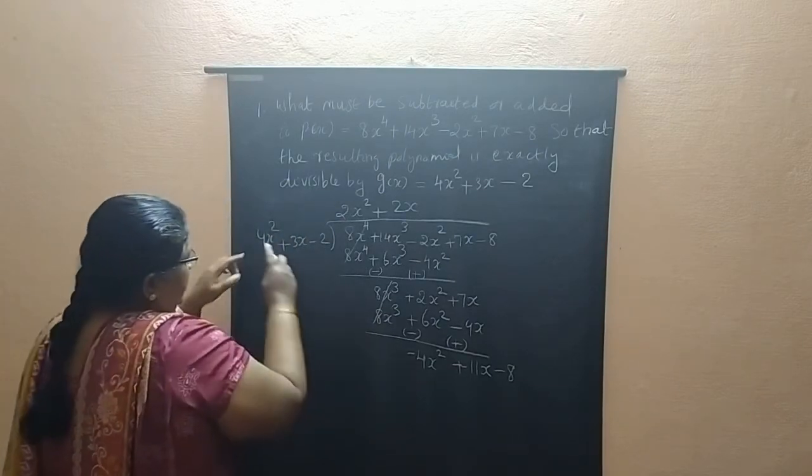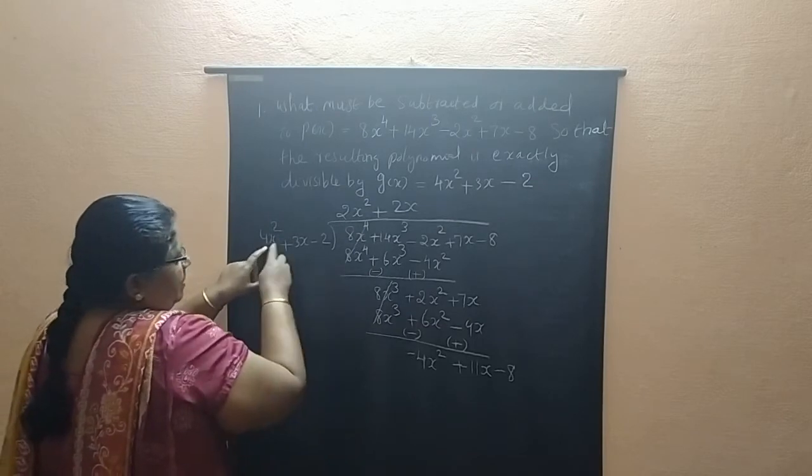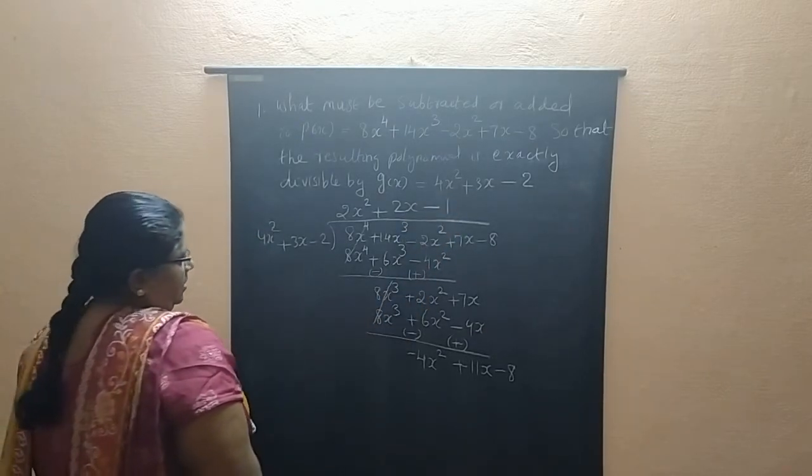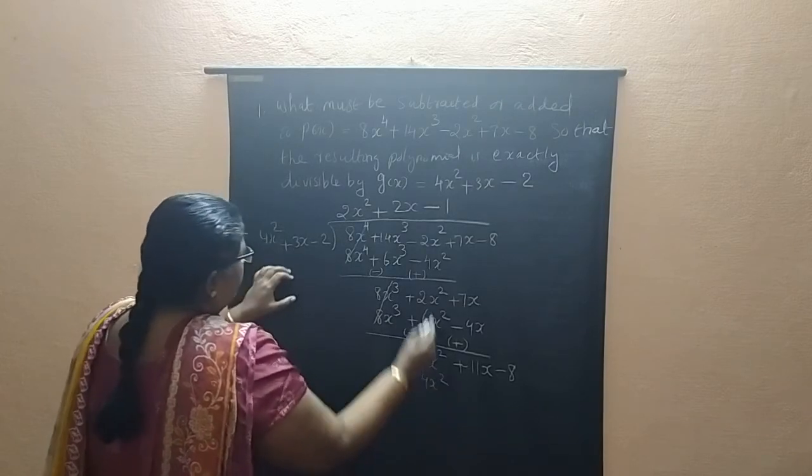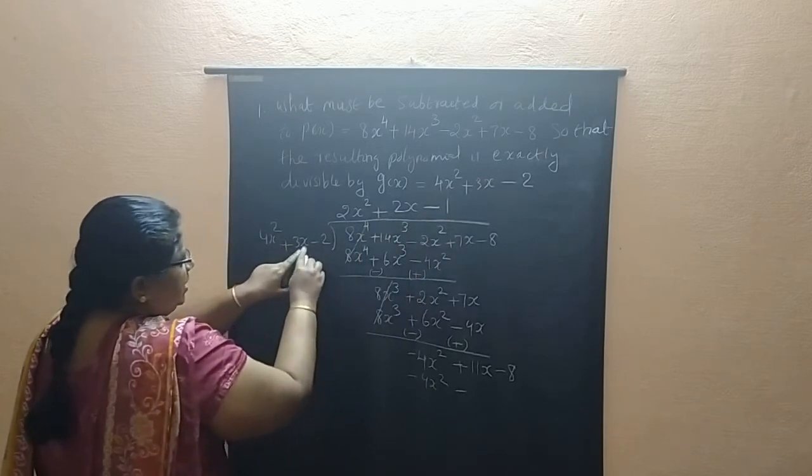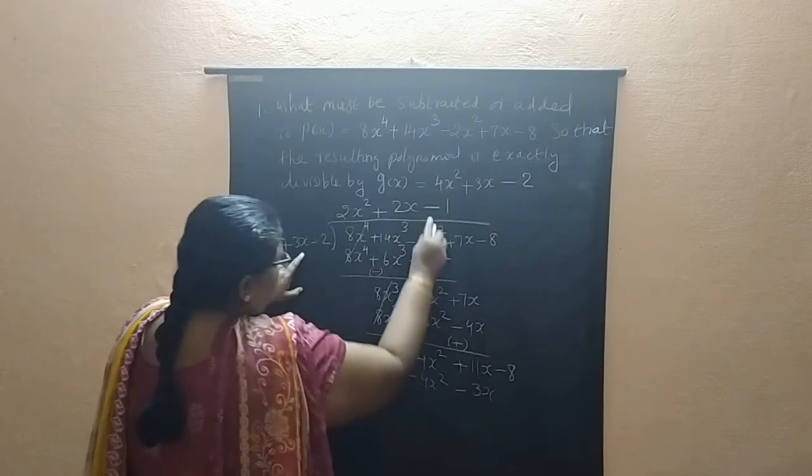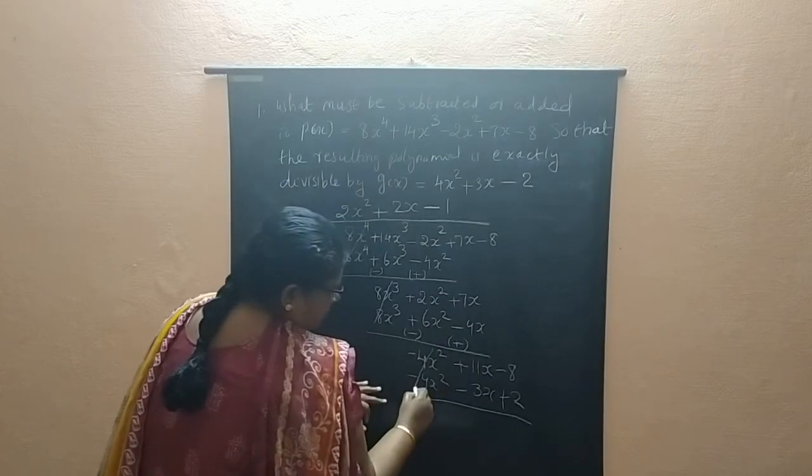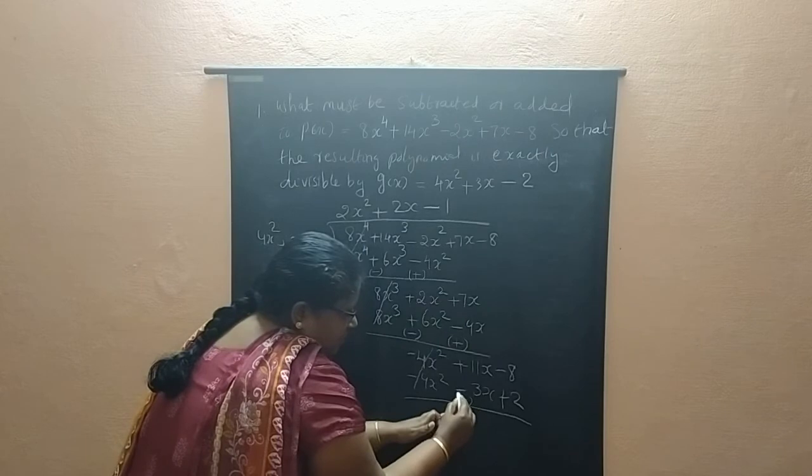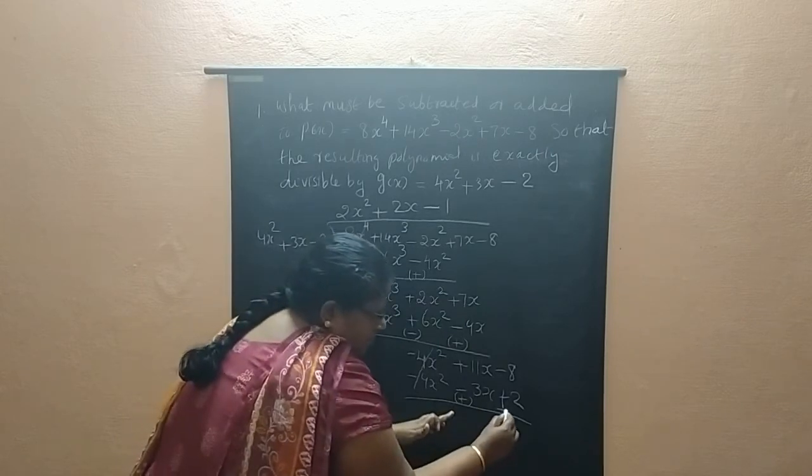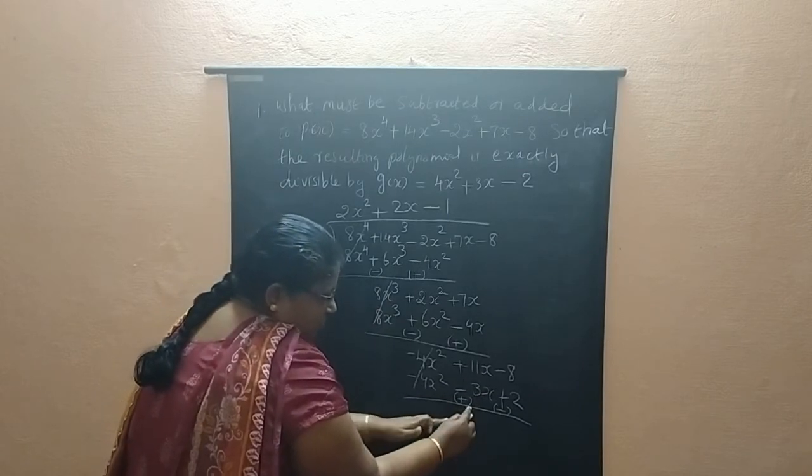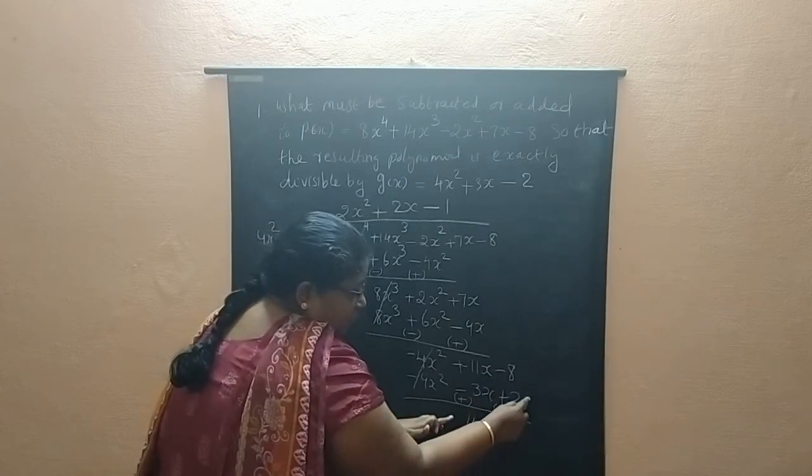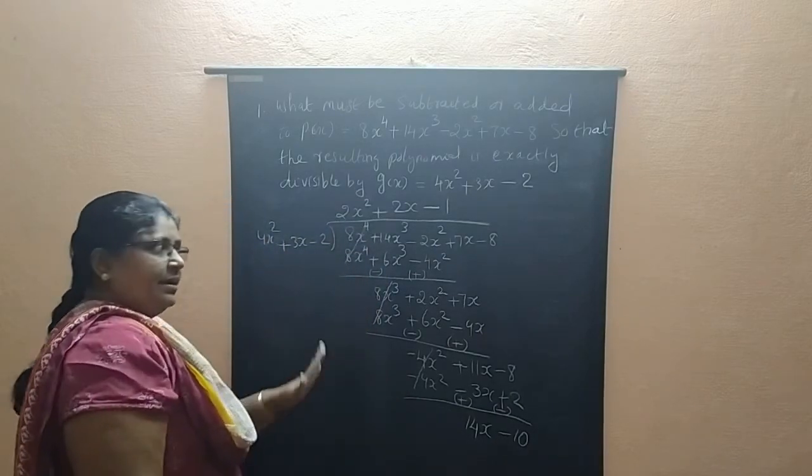Minus 4X square divided by 4X square. Minus divided by plus is minus. 4X square by 4X square is 1. Now multiply minus 4X square. Minus into plus is minus. Minus 1 into 3X is 3X. Minus into minus is plus. Minus 1 into 2 is 2. Subtraction. This we can cancel. Sign will change. Minus become plus, plus become minus. Positive 11 and positive 3 is positive 14X. Negative 8 and negative 2 is negative 10. Division stopped.